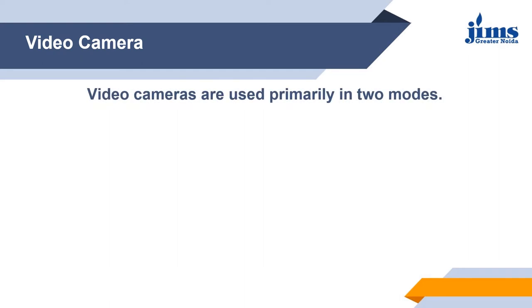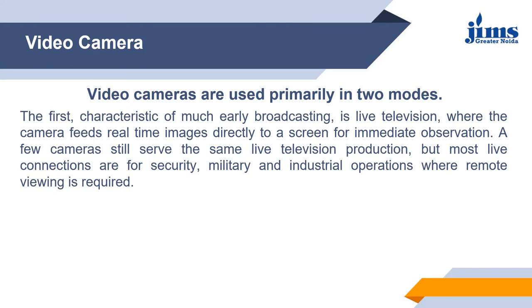In the second mode, the images are recorded to a storage device for archiving or further processing. For many years, videotape was the primary format used for this purpose, but was gradually supplanted by optical disk, hard disk, and then flash memory. Recorded video is used in television production and more often in surveillance and monitoring tasks where unattended recording of a situation is required for later analysis.